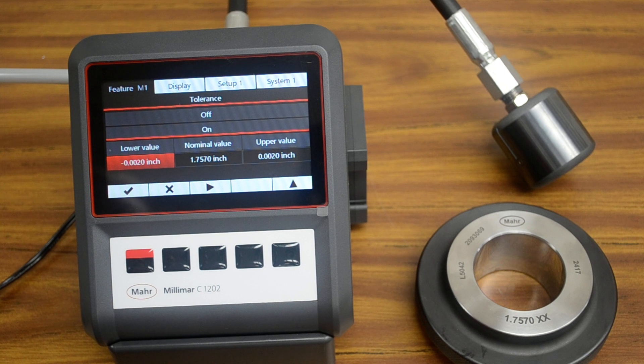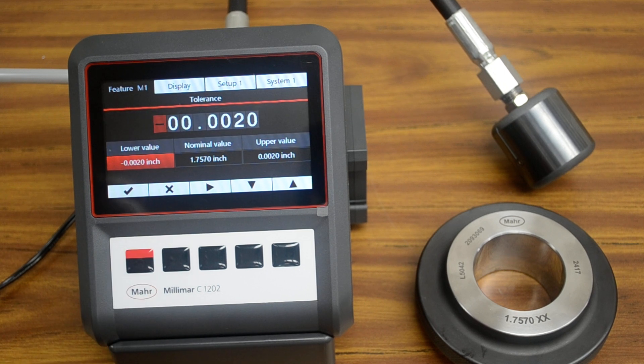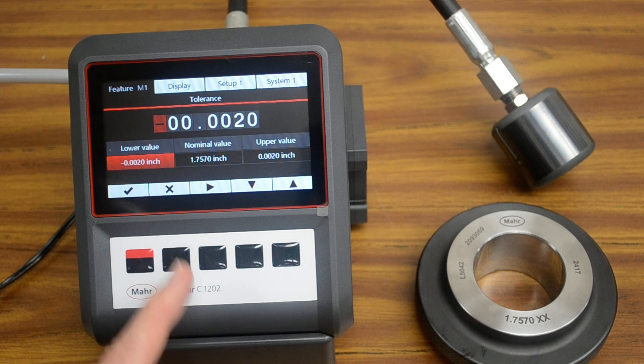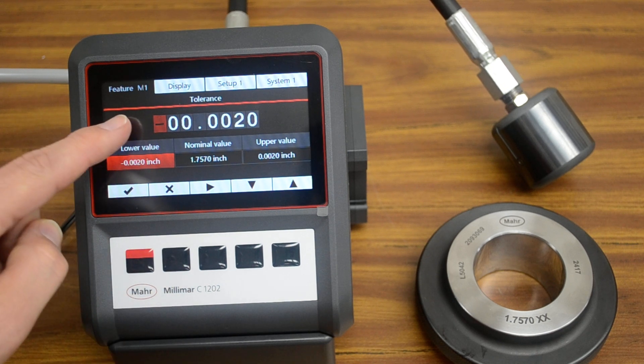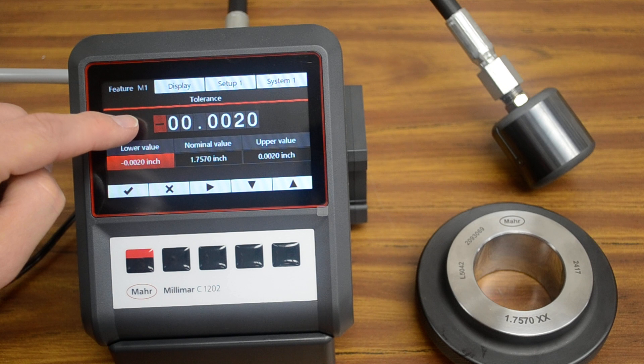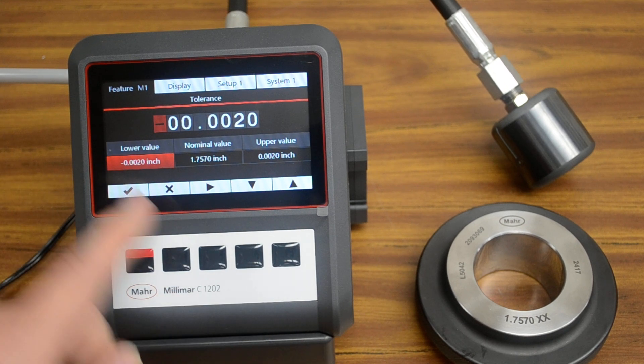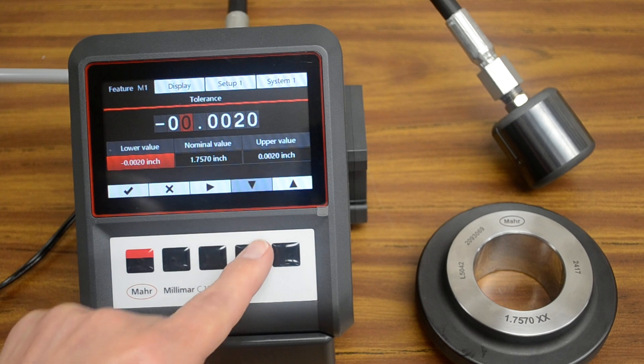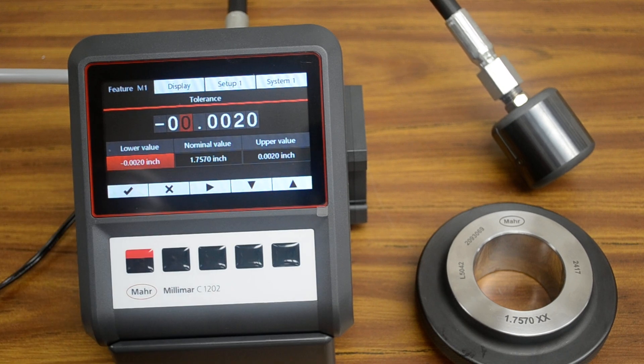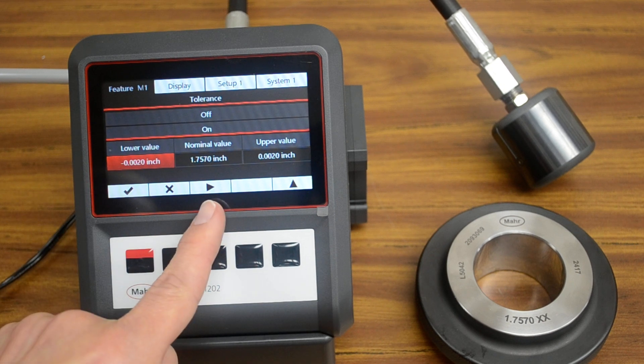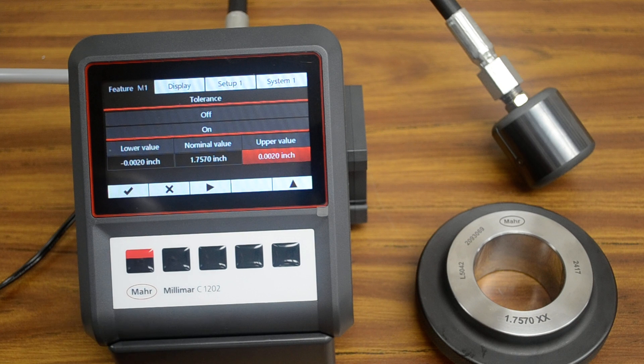If we wanted to change that, we would press the check, and we get this same display with the same soft keys here. Since it's a lower value, we want to set it to minus. It was plus, and now it's minus. You can use the right arrow key to change all the digits along the way. When you get the number that you want in there, press the check, and it comes back, and you can use the right arrow to go to the upper value.